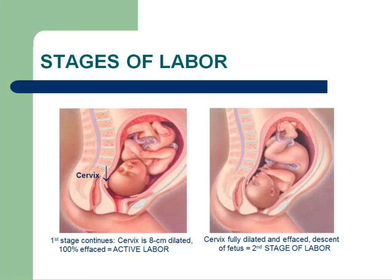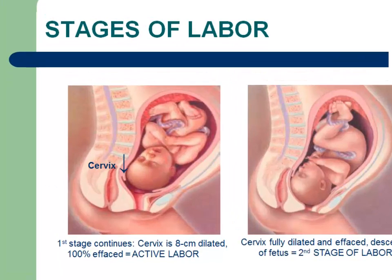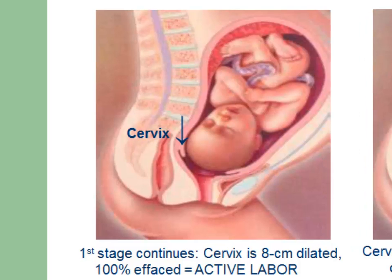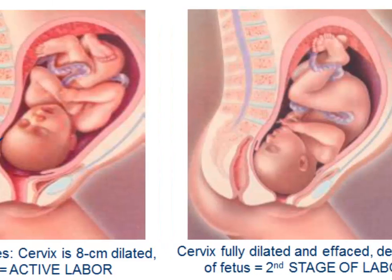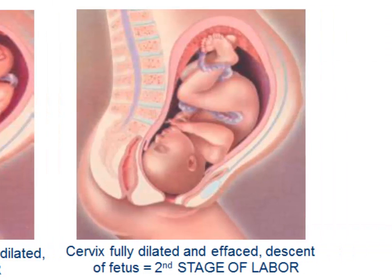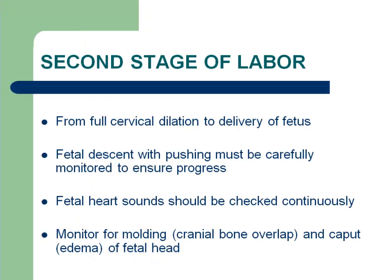These illustrations represent the continuation of labor. On the left, the cervix is dilated significantly and the fetal head would be easily palpated on vaginal examination. On the right, the cervix is dilated completely and descent of the fetal head through the pelvis continues. Once the cervix has completely dilated, the patient has entered the second stage — the time in labor when the patient pushes and fetal descent through the pelvis occurs, ultimately leading to delivery of the baby.